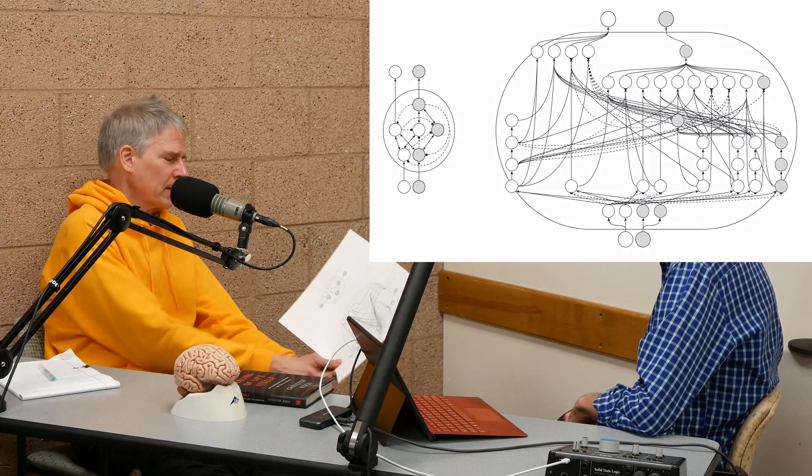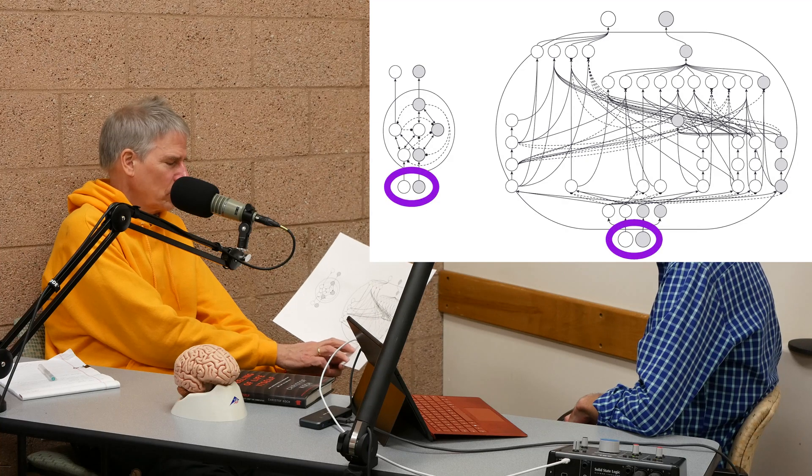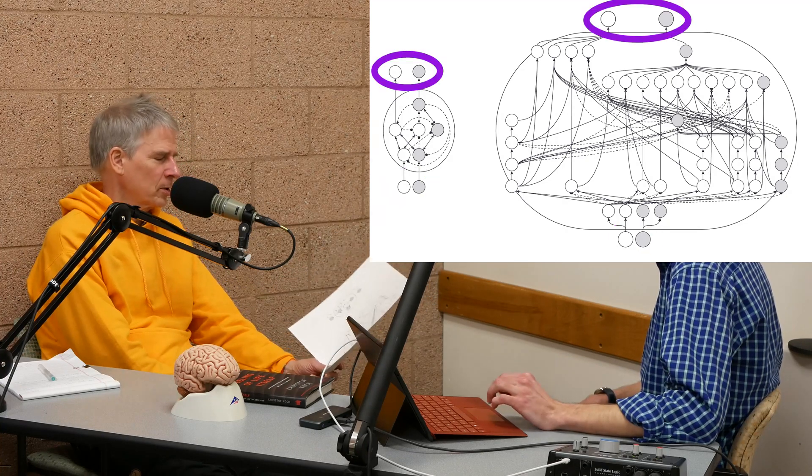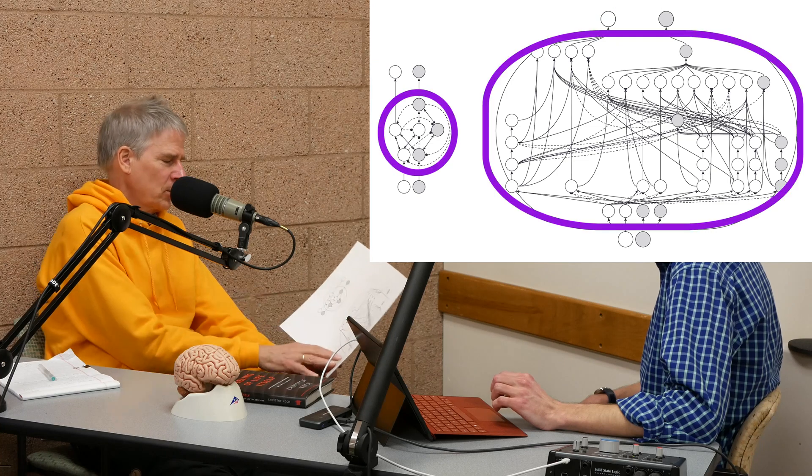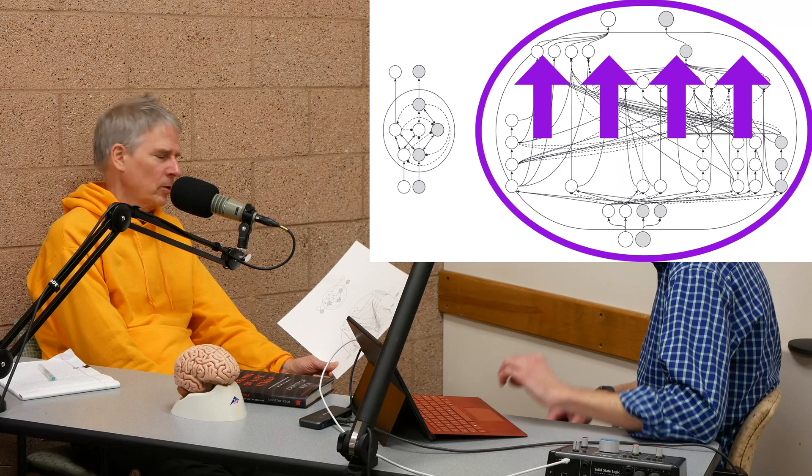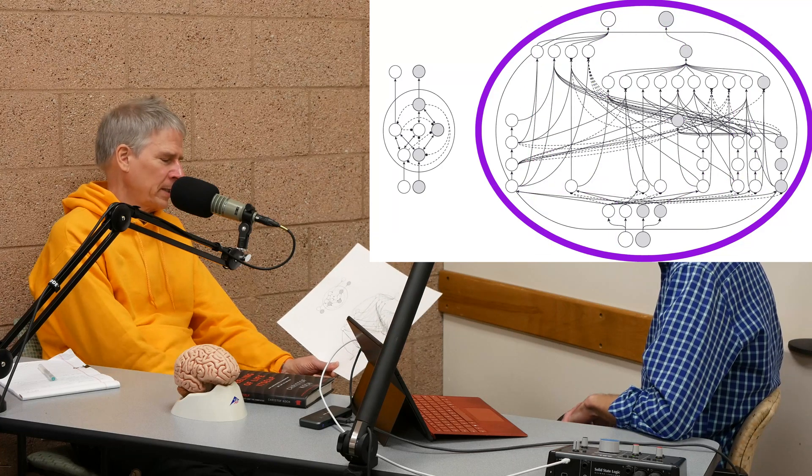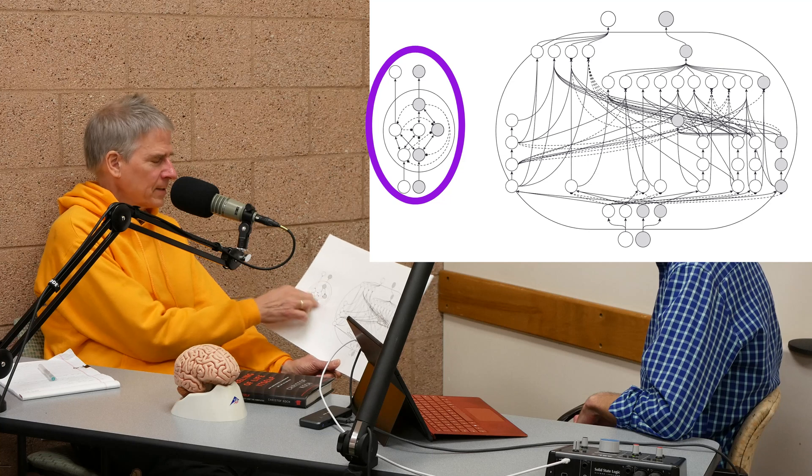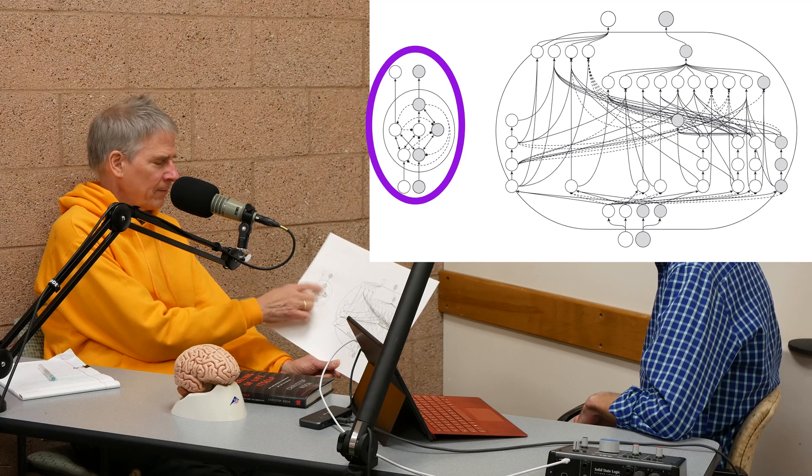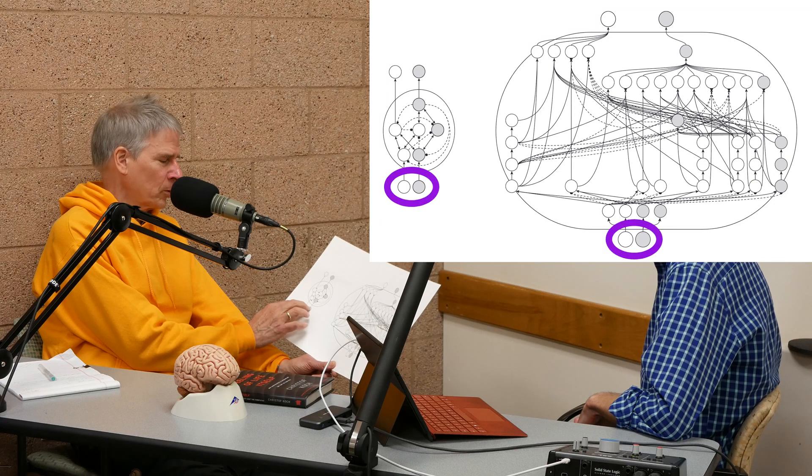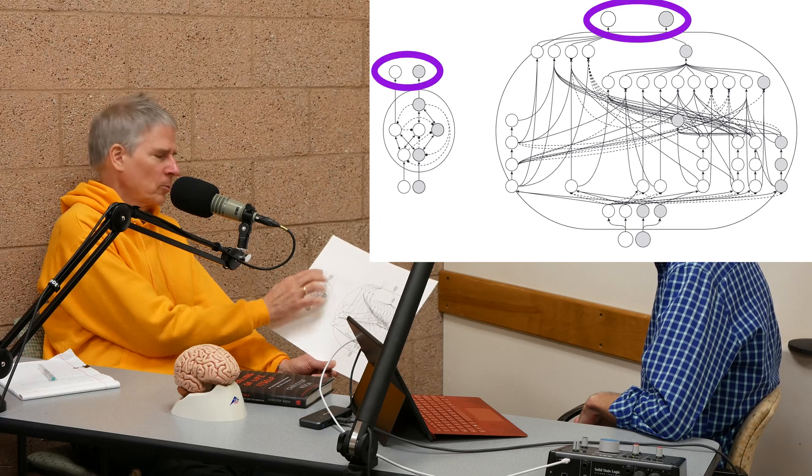So here what you have, you have systems, let's say that have two input neurons and two output neurons. In both cases, two input neurons and two output neurons, and they perform a computation. And you can show this is a strictly feed-forward system like a standard neural net in deep learning, although it only has three or four layers. And this is a much more complicated system that has heavy feedback. But you can show both computationally do exactly the same. They take the same input, transform it into the same output.